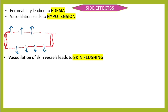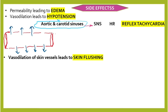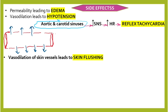Going back to hypotension: in the bifurcation of the carotid artery we have the carotid sinus with carotid bodies, and in the aortic arch we have the aortic sinus with aortic bodies. These contain baroreceptors which sense blood pressure. If pressure is found to be decreased, it activates the sympathetic nervous system, increasing heart rate and causing reflex tachycardia.